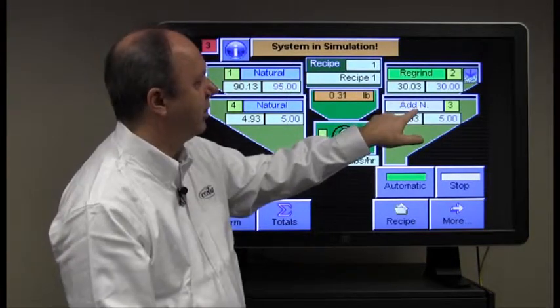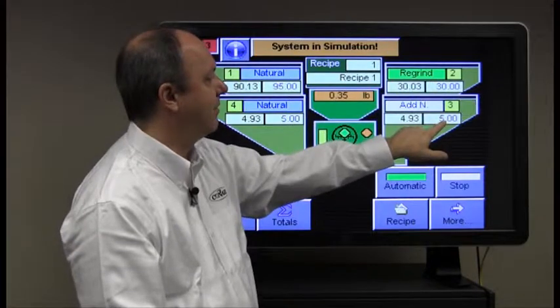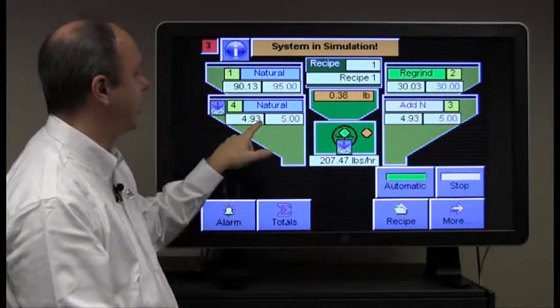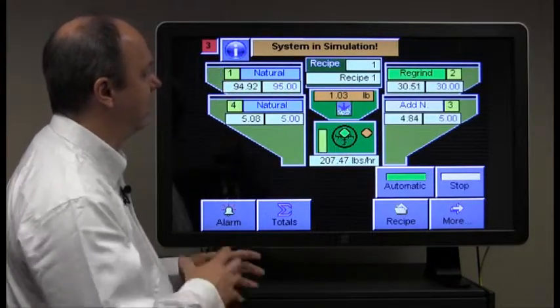Okay. Again, you can see on component 3 we changed it to an additive natural. So it did the regrind first. It's doing the additive natural next, starting with the next minor ingredient that's a natural and finishing with the major ingredient that is a natural.